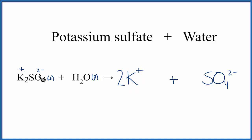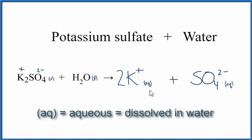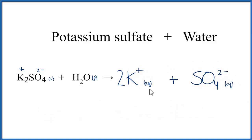Because this is dissolved in water, we'll write AQ after each ion, which means aqueous — aqueous means dissolved in water. Since we wrote AQ, we don't need to write liquid water, H2O, on this side of the equation. The AQ tells us that these are dissolved in water.